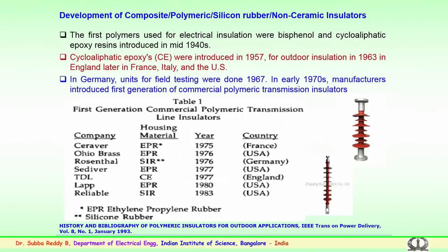Other companies including Hoiobras, Rosenthal, Sediver, TDL, LAP, and Reliable started during a similar period from 1975 to 1983, using either ethylene propylene rubber or silicon rubber. These materials of organic nature were being tried out in the initial stages.